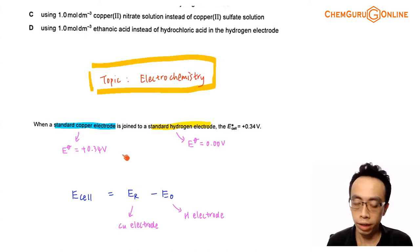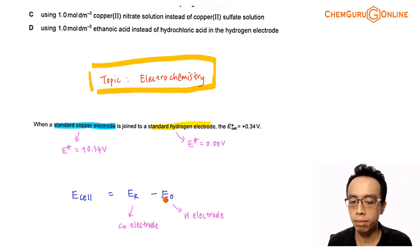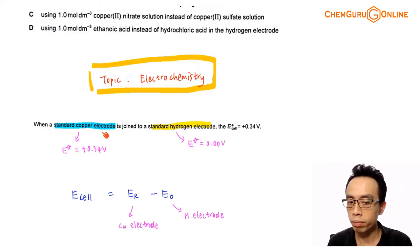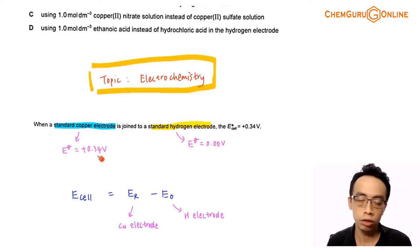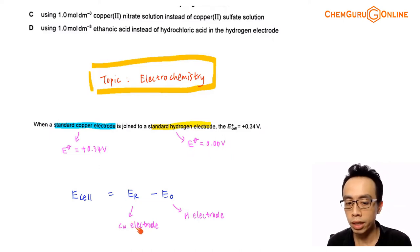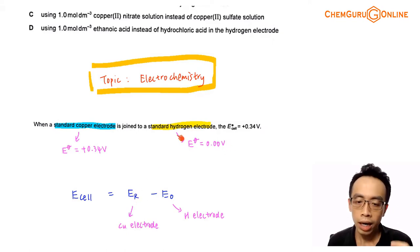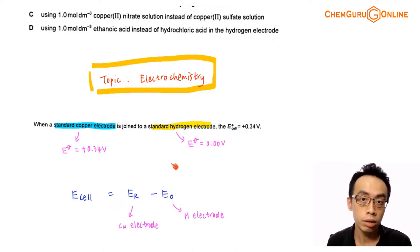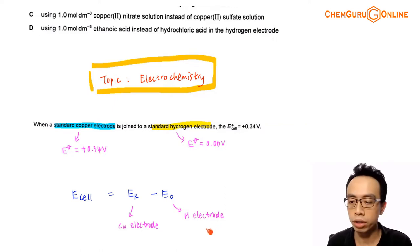For an overall electrochemical cell, calculating E cell uses the formula E reduction minus E oxidation. The reduction half-cell is the copper electrode, because when you attach these two half-cells together, the one with a more positive E° value undergoes reduction, and the one with a less positive E° value undergoes oxidation. So copper undergoes reduction and the hydrogen electrode undergoes oxidation.